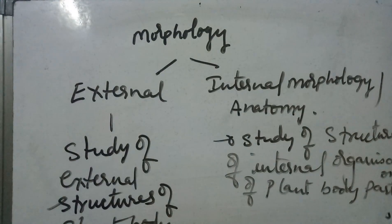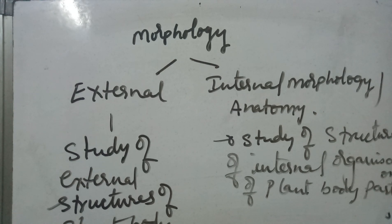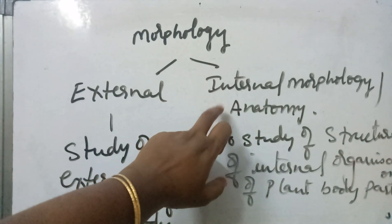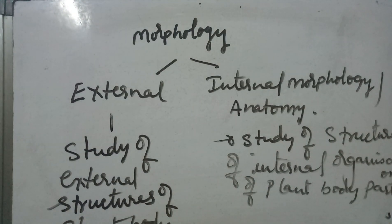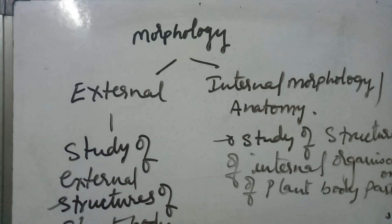In internal morphology or anatomy, we discuss internal parts — how cells organize into tissues. In plant anatomy, we first discuss different types of tissues present. Then we look at transverse sections of stem, root, and leaf to see how they show different internal parts. Morphology is a very important branch and an important topic covered in your first year.